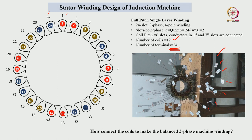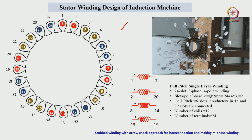We can see n number of terminals coming out — 24 terminals from 12 coils placed in 24 slots. Now, how to connect these coils or terminals to make a symmetrical three-phase machine winding. The traditional way uses developed winding diagrams, but the easiest way is the stubbing approach with arrow representation. The stubbing assigns 4 coils to A phase, 4 coils to B phase, and 4 coils to C phase.